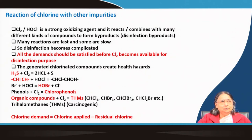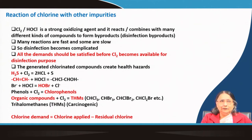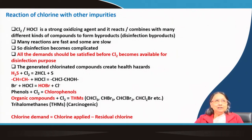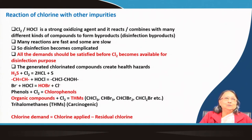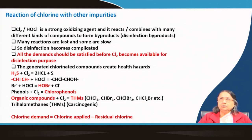Unless the chlorine demand is met, we will not get free chlorine to kill bacteria. Those compounds must first satisfy their demand, and after that we get chlorine for disinfection. The generated chlorinated compounds can also create health hazards. In groundwater, H₂S or sulphide salts may be present because water leaches through sulphide-bearing rocks. H₂S gas can react with chlorine to form HCl and sulphur.